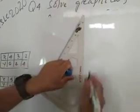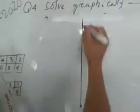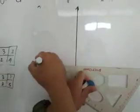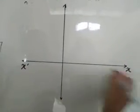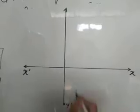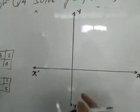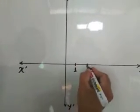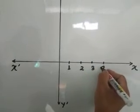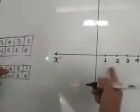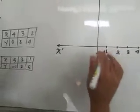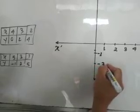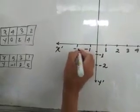Now we are going to draw a graph here. By using a scale, draw the vertical line — that is the Y-axis. Draw the horizontal line — that is the X-axis. On the X-axis write 1, 2, 3, 4, 5. The highest value of X is 5, so you write up to 5. On the negative side, write minus 1 and minus 2.